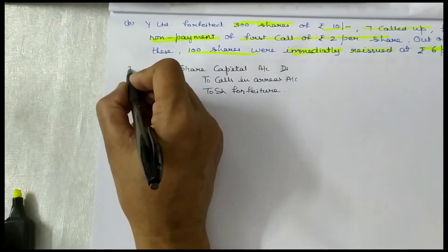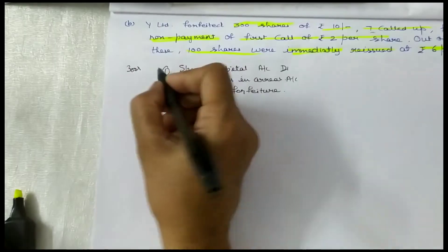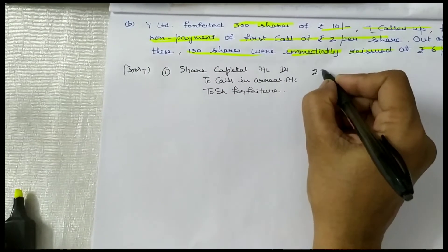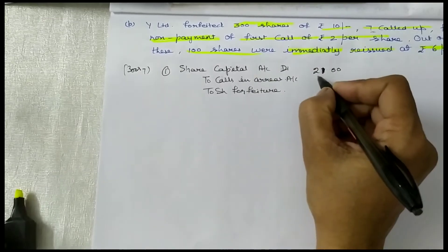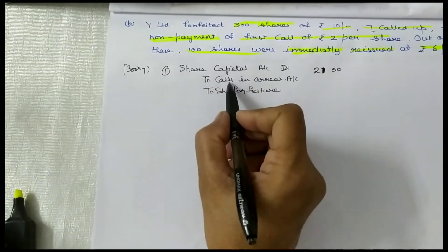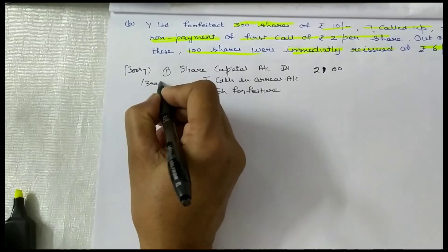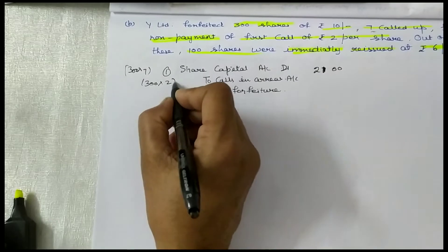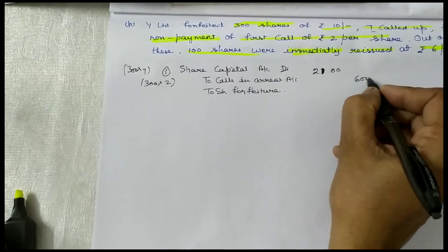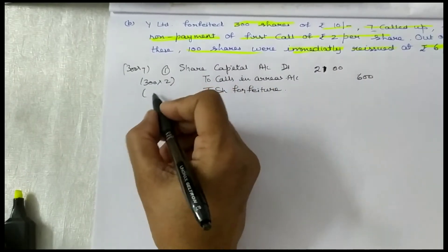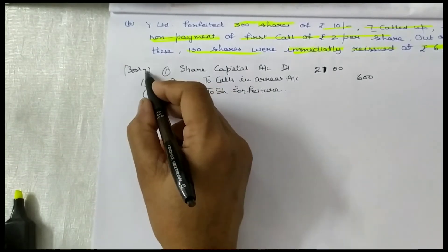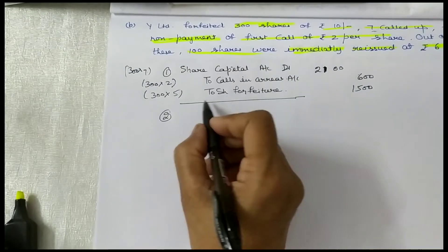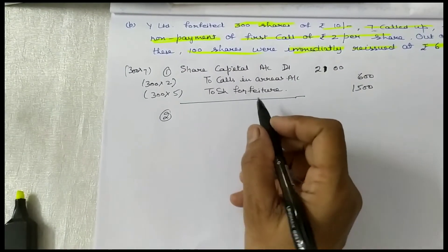Here, 300 shares are involved, so 300 into 7 called up — always show the called up amount, which is Rs.2,100. Calls in arrears: due to non-payment of first call of Rs.2 per share, 300 into 2 is Rs.600. Rest of the amount has been received, so 300 into 7 minus 2, Rs.5 has been received, which equals Rs.1,500. Narration: forfeiture due to non-payment of first call of Rs.2 per share.